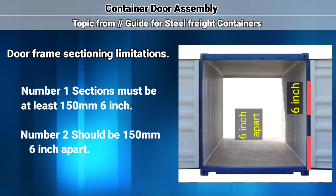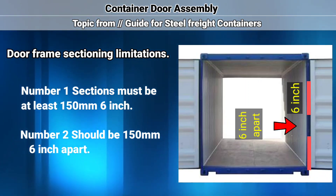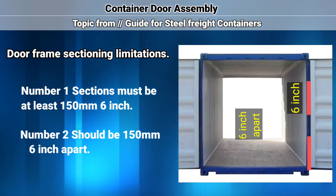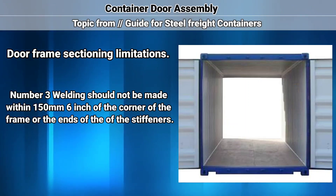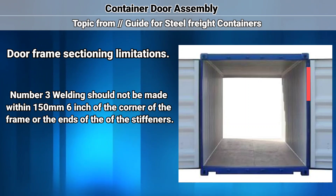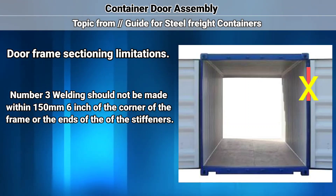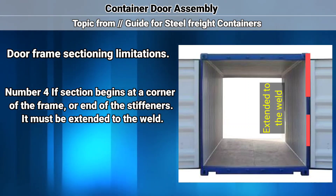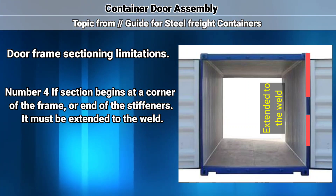Door frame sectioning has some limitations. Number 1: sections must be at least 150 mm (6 inch). Number 2: should be 150 mm (6 inch) apart. Number 3: welding should not be made within 150 mm (6 inch) of the corner of the frame or the ends of the stiffeners. Number 4: if a section begins at a corner of the frame or end of the stiffeners, it must be extended to the weld.